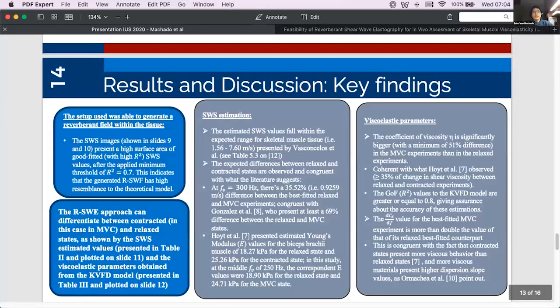Now let's discuss even further the key findings of this study. First of all, as it was mentioned before, the SWS images present a high surface area of good fitted SWS values even after the applied minimum threshold of R squared equals 0.7 and this for us indicates that the setup used was able to generate a reverberant field within the tissue. Moreover, these results confirm that the reverberant shear wave elastography approach can differentiate between contracted and relaxed states as shown by both the SWS estimated values and the viscoelastic parameters from the KBFD model.